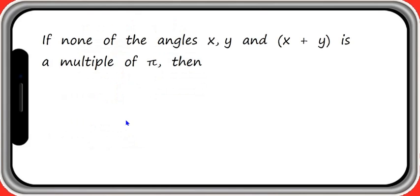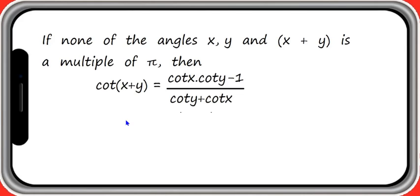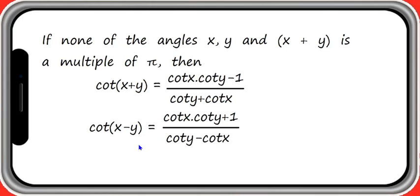Now let us derive the formula for cot of x plus y. To define cot of x plus y, the condition is none of the values of x, y and x plus y is a multiple of pi, because cot is not defined when x is a multiple of pi. The formula for cot of x plus y is: cot x into cot y minus 1, divided by cot y plus cot x. Similarly, cot of x minus y is equal to cot x into cot y plus 1, divided by cot y minus cot x.